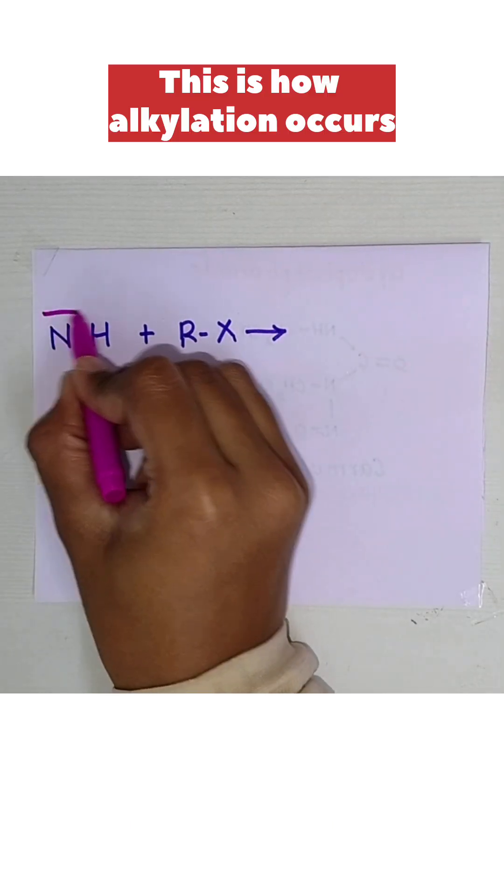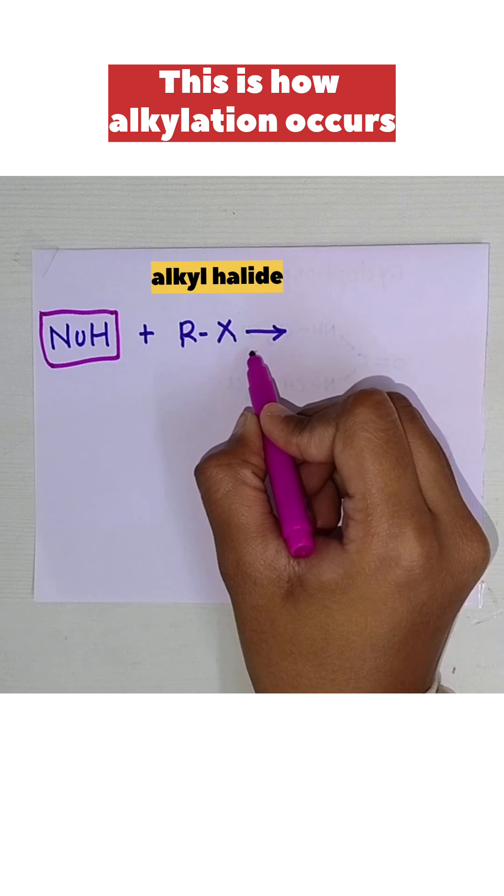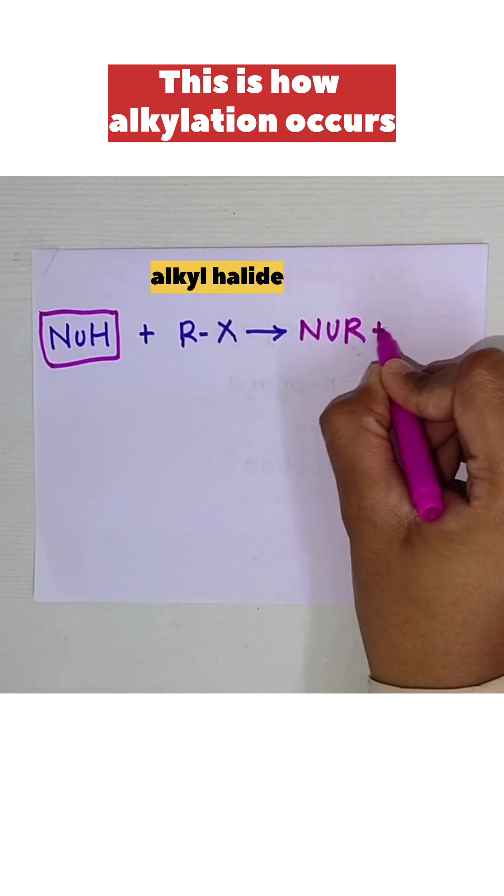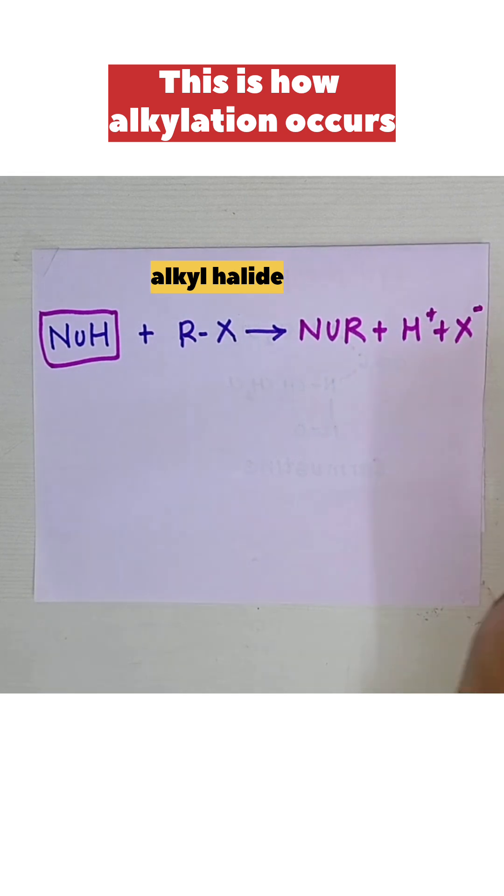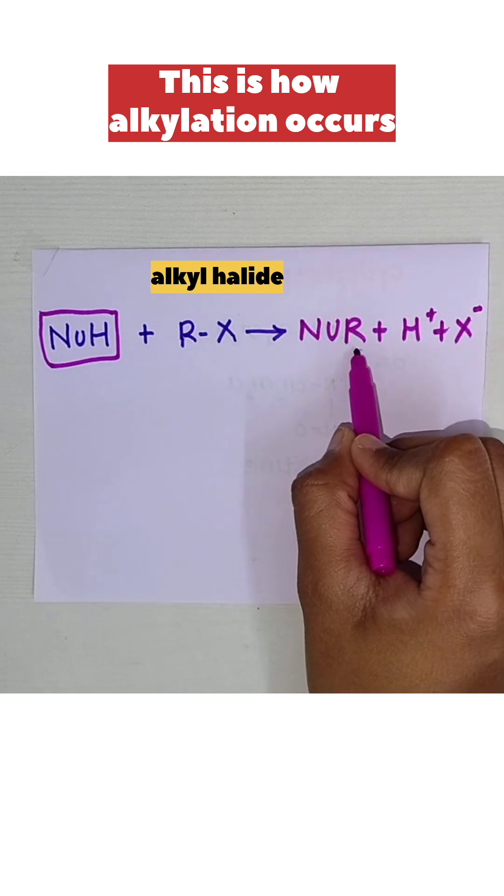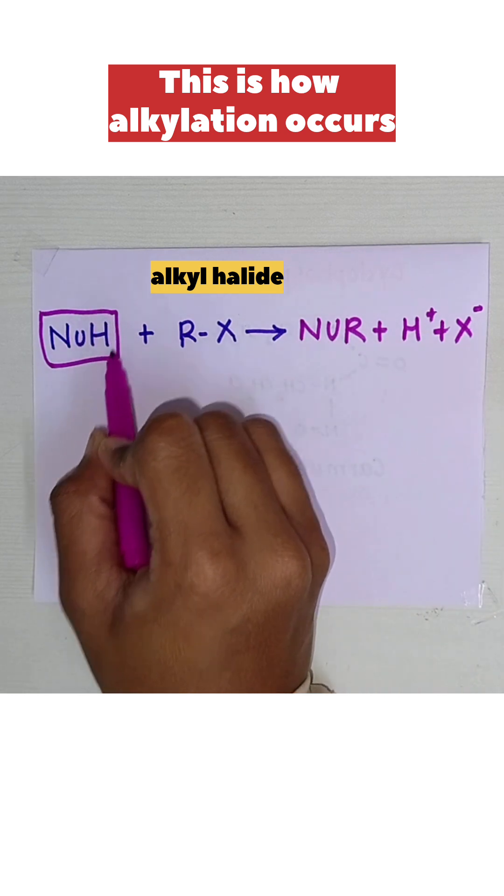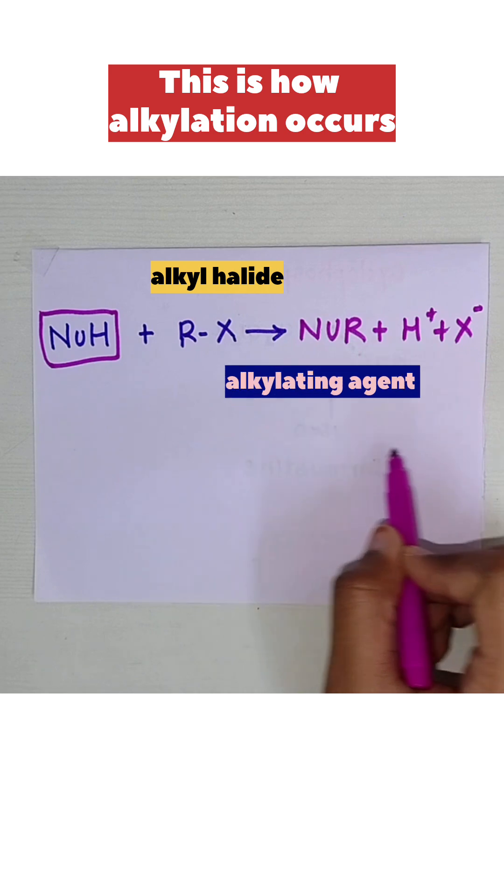Consider this compound NUH. This reacts with alkyl halide RX to form NUR plus H+ and X-. In this reaction, R is the alkyl group that replaces hydrogen to form NUR, which acts as the alkylating agent.